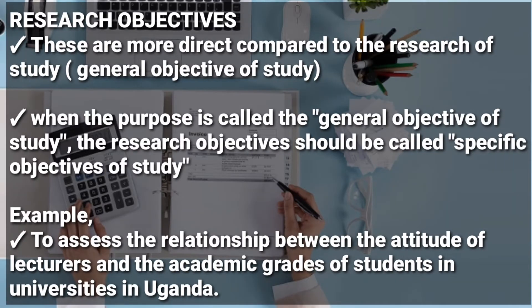The second component is research objectives. Research objectives are more direct compared to the purpose of study. The purpose of study is a general objective, while the research objectives are specific objectives — they are more direct compared to the purpose of study.